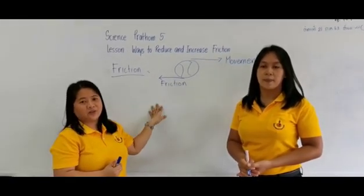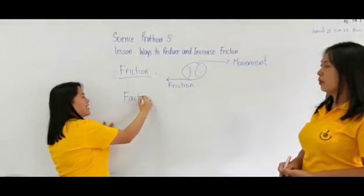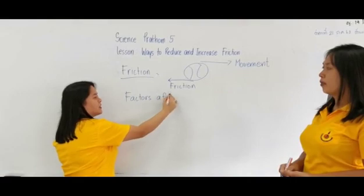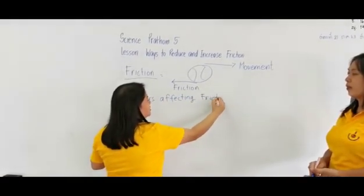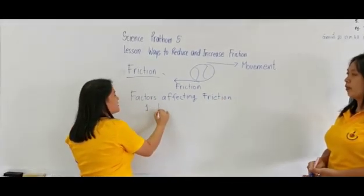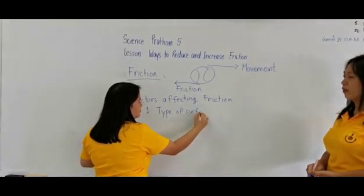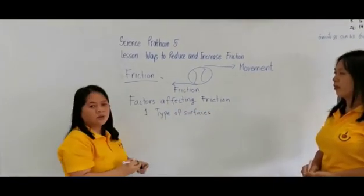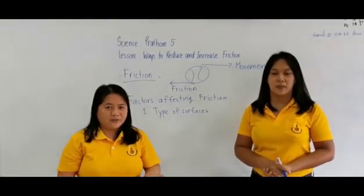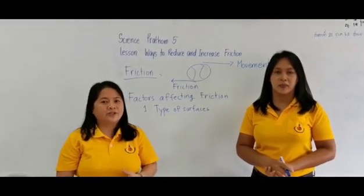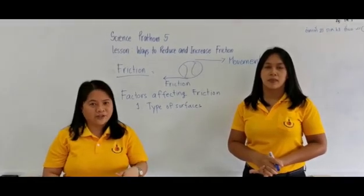Now we're going to discuss the factors affecting friction. The first one is the type of surfaces. If the surface is rough, then there is more friction — greater friction. And the lesser the roughness of the surface, the less friction there is.